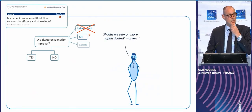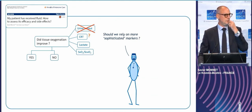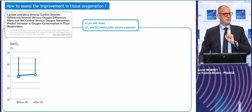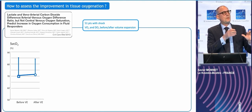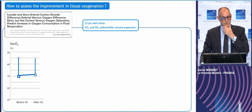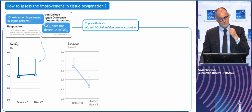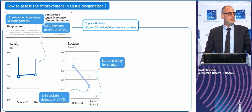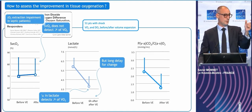Perhaps we may rely on more sophisticated indicators of tissue oxygenation — lactate and SVO2. SVO2 remained roughly stable in septic patients, likely because of oxygen extraction impairment. Lactate is a good indicator of the effect of fluid, but of course it takes time to change. So we would need something more reactive — as reliable but more reactive to the changes induced by a short fluid bolus.